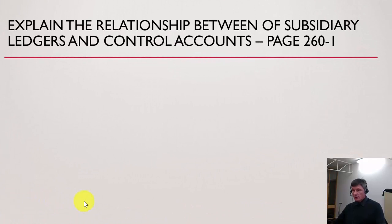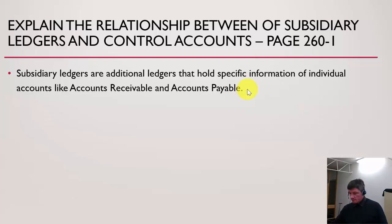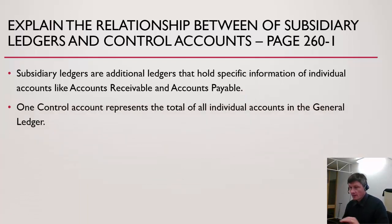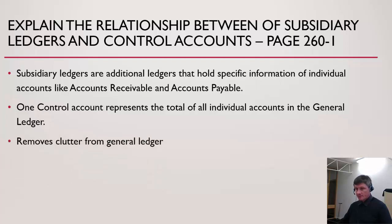Subsidiary ledgers and control accounts: subsidiary ledgers are additional ledgers that hold individual information — for example, individual accounts receivable and accounts payable accounts. This is contrasted with a control account in the general ledger, which holds the total of all accounts payable or receivable. The subsidiary ledger holds all the individual accounts we owe money to and the same with accounts receivable. This removes clutter from the general ledger and gives us more control.